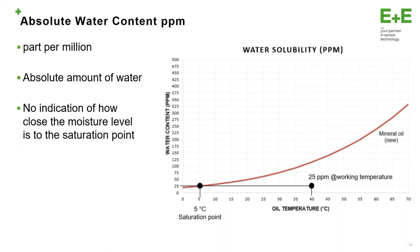How can we quantify the water? We can quantify it in the absolute way, just measuring the absolute water content, typically expressed in PPM (parts per million). It's a number which describes the amount of water, but it's very simple and we have no indication of how the moisture level relates to the saturation point. For example, if we have 25 PPM at the working temperature, we just know that we have 25 PPM inside our transformer. Checking with the water solubility curve, we see that if we cool down this 25 PPM down to 5 degrees Celsius, we have condensation — but we don't know how far we are with respect to the saturation point.